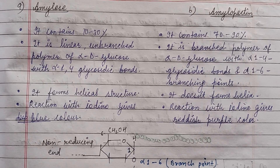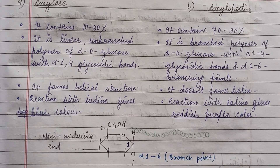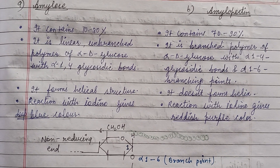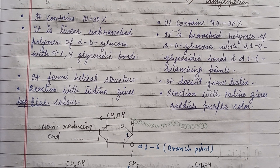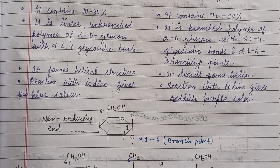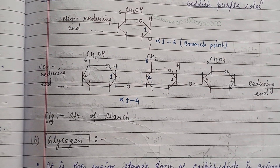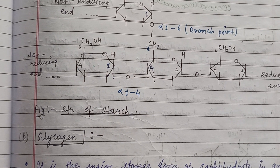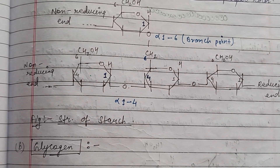Some differences between amylose and amylopectin: amylose has an unbranched structure, while amylopectin has a branched structure. Here is the structure of starch, which has alpha 1-4 linkage and alpha 1-6 linkage at the branch points.